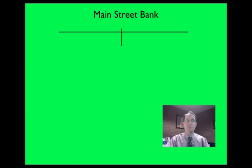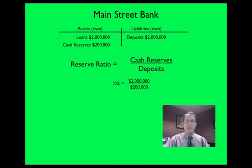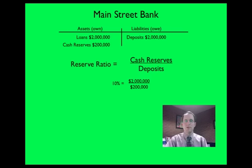Here's an example: Main Street Bank has two million dollars in loans, two hundred thousand dollars in cash reserves, and two million dollars in deposits. The reserve ratio — the money they're required to keep in the bank — is cash reserves over deposits. That reserve ratio is mandated by the Federal Reserve. With a ten percent reserve ratio, we can see the bank is maintaining the appropriate reserve ratio: two hundred thousand dollars in cash reserves over two million dollars in deposits.